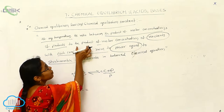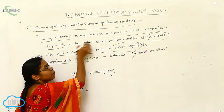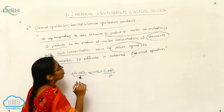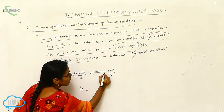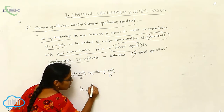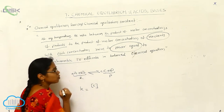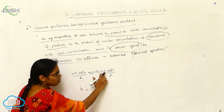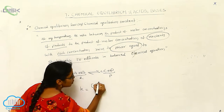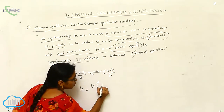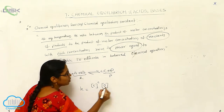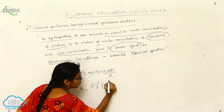Now I want to write the chemical equilibrium constant depending upon the definition. First, the product of molar concentrations of products — concentrations are always expressed by square brackets. The concentration of C is always raised to the power c, written as [C]^c. Next, one more product is D, with concentration raised to the power d, written as [D]^d.